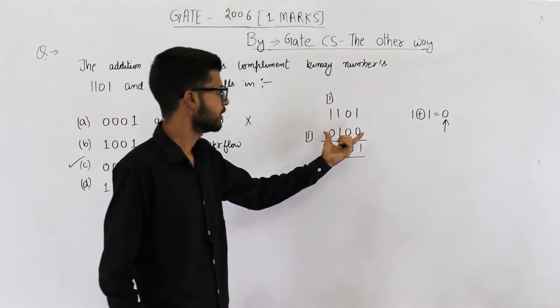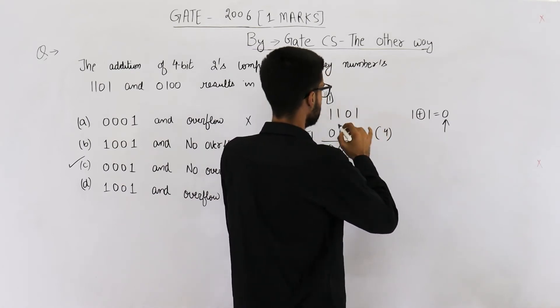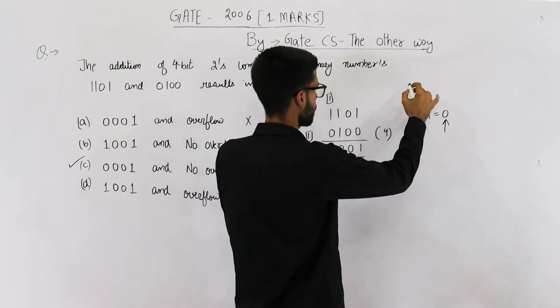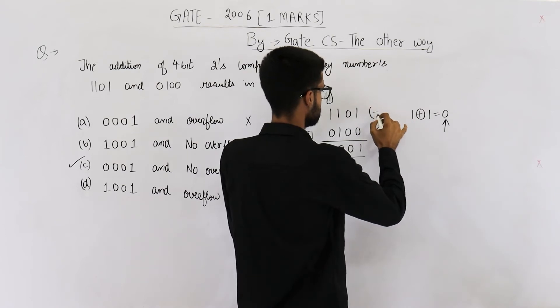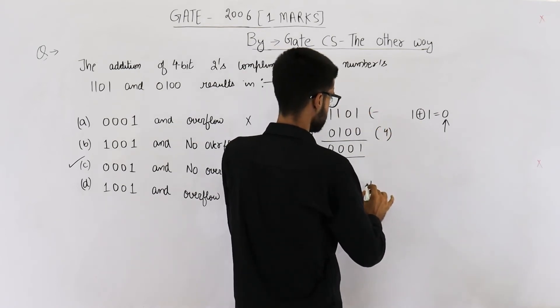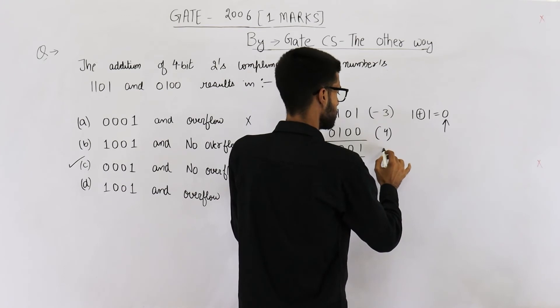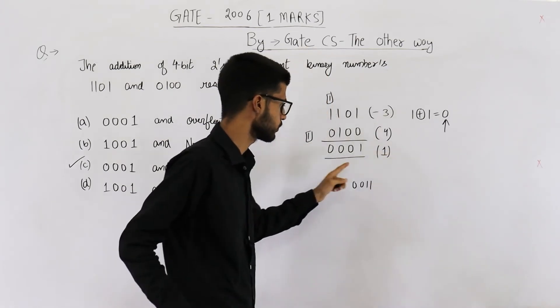Moreover you can see this number is 4. And this number will be 1100, which is minus 3. 4 minus 3 will be plus 1. So this is correct.